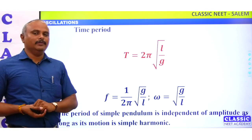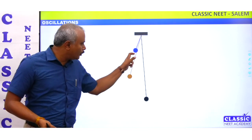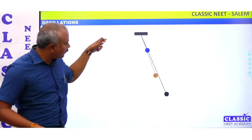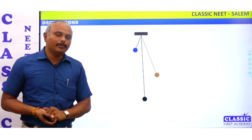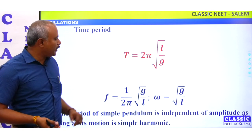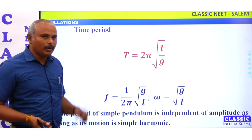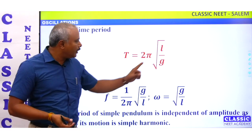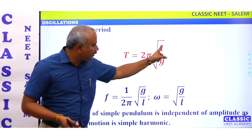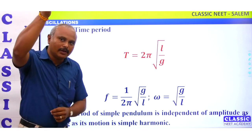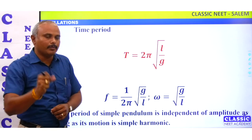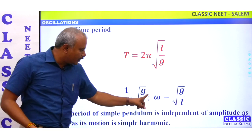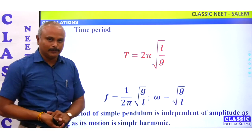That is the time period. When you go to the mean position, you go to the left side and come back to the mean position — that is the time period. The formula for time period is 2π into root of L by g, where L is the length of the thread and g is gravitational acceleration.